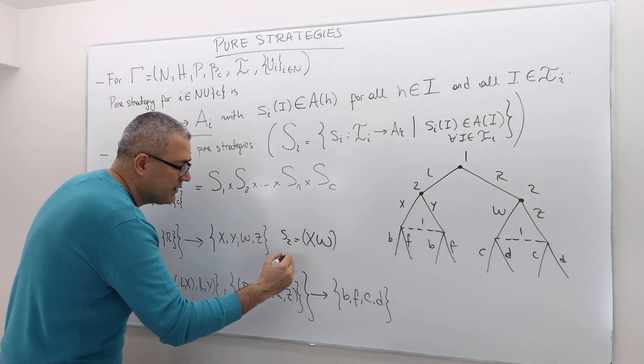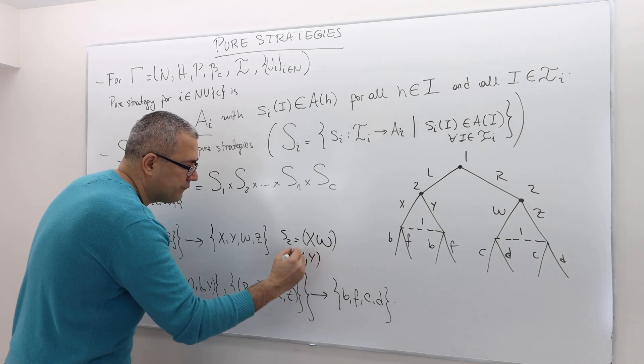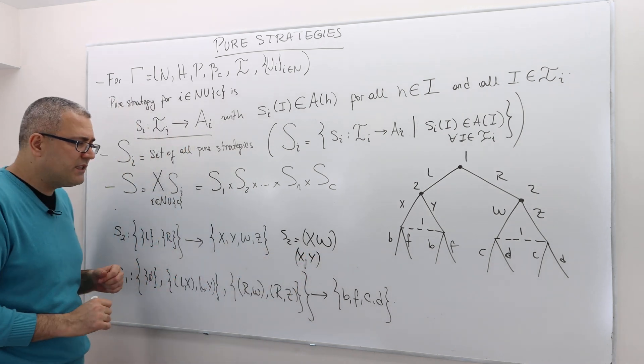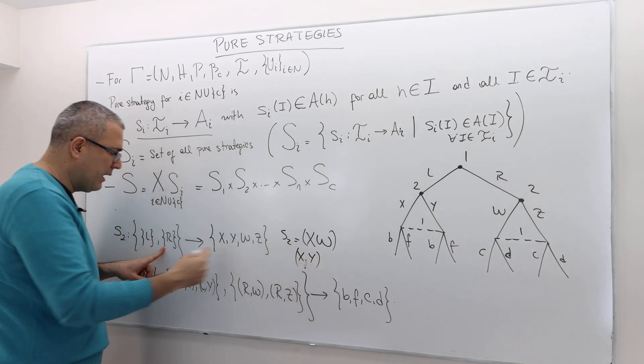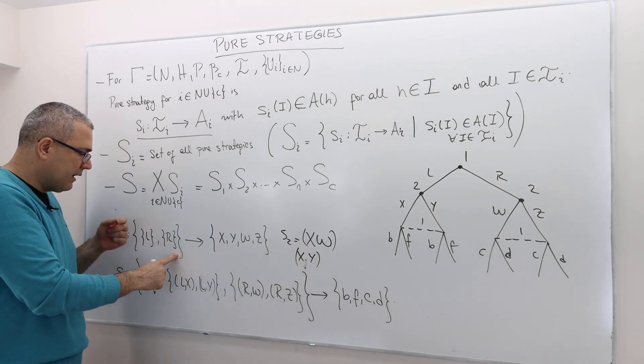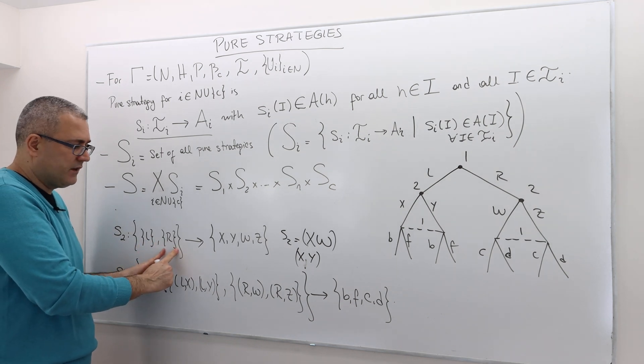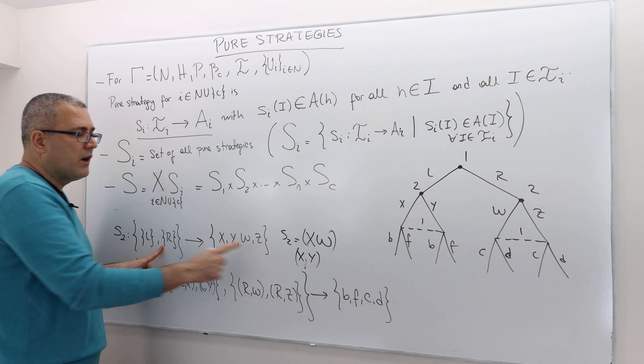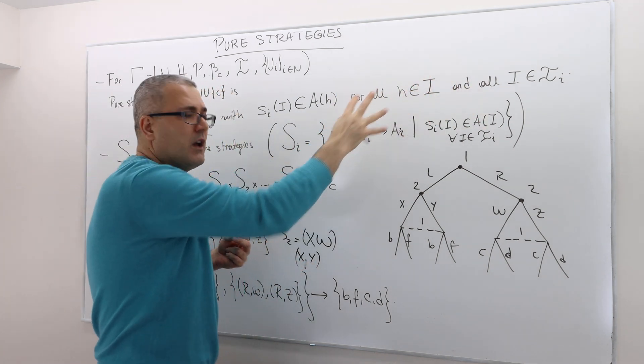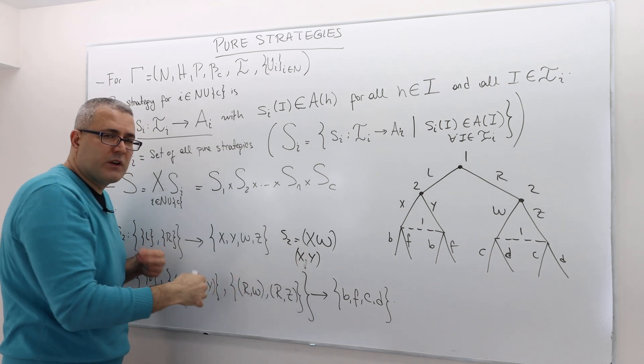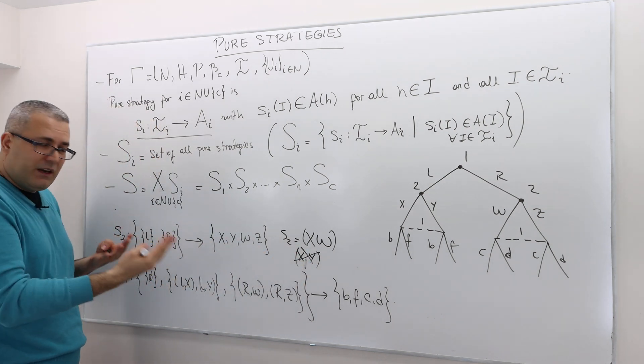But for example, this is not a strategy: X, Y. Why is that? Well, because the second term corresponding to what strategy mapping this info set. Well, after right, Y is not an available action. So you're violating this part. So this function, therefore, is not a strategy.